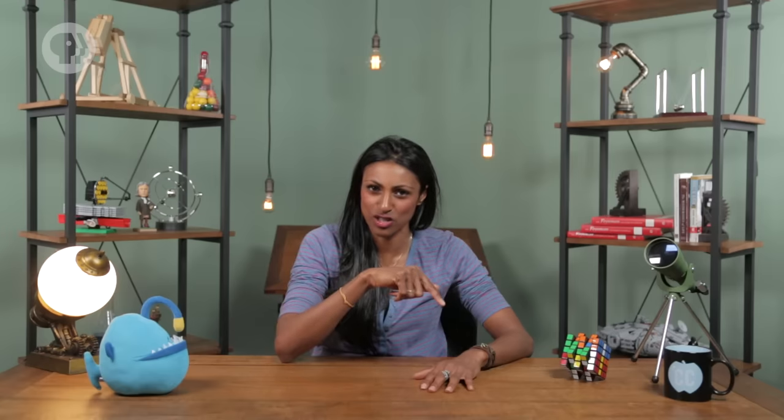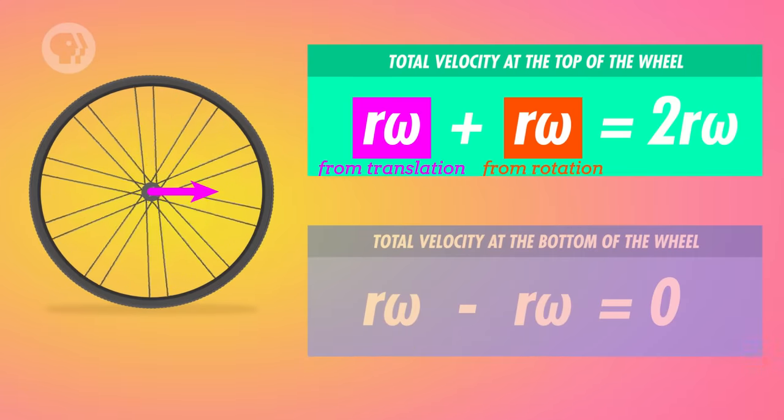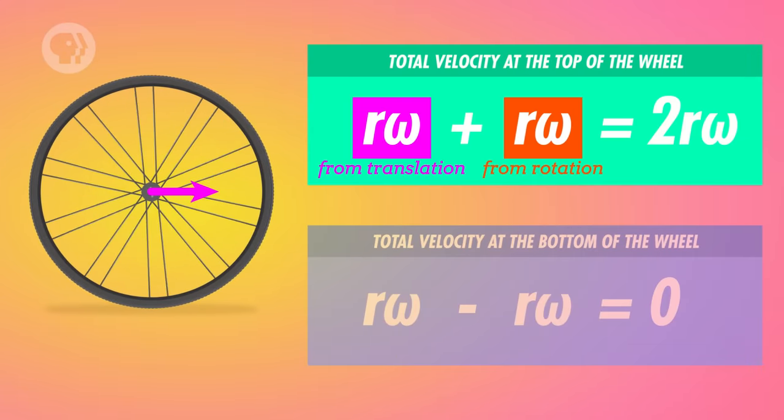Here's the weird part. We just saw that the translational velocity of the wheel is equal to the radius times the angular velocity. And we know that, in general, the magnitude of tangential velocity is also equal to the radius times the angular velocity. So the top of the wheel will be moving exactly twice as fast as the center of the wheel relative to the ground.